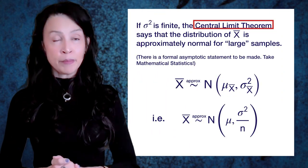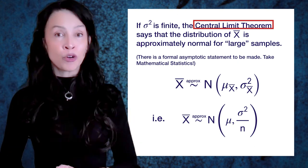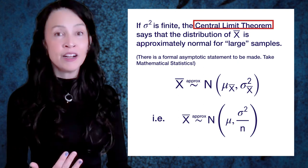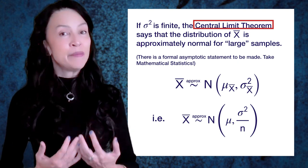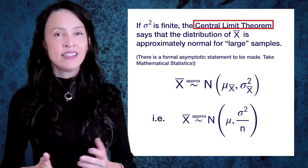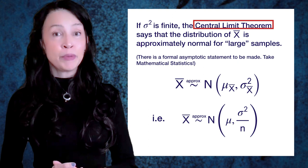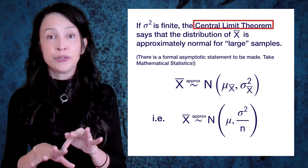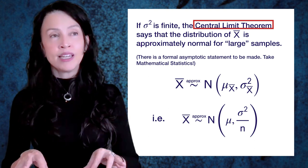X-bar has its own distribution. We just defined its mean and variance, and its distribution depends on the underlying original distribution for X1 through Xn. Suppose I have X1 through Xn iid from any distribution with mean mu and variance sigma squared. If sigma squared is finite, the famous central limit theorem kicks in and says that the distribution of the sample mean is approximately normal for large samples. You'll be okay for this course if you know that sample means have approximately a normal distribution for large sample sizes. Large in statistics is usually considered a sample size n greater than 30 or 40 - though these are horrible approximations to infinity, they work quite well in most cases.